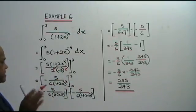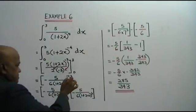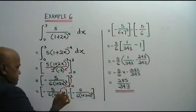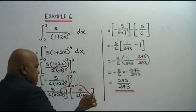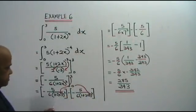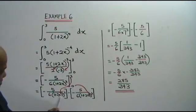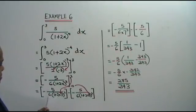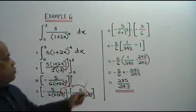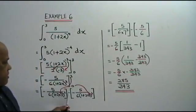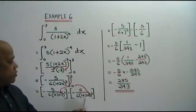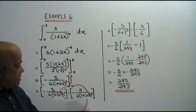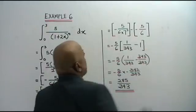So first we substitute x with 3, minus when we substitute x with 0. For x equals 3: 2 times 3 is 6, 6 plus 1 is 7, so we get negative 5 over 6 times 7 cubed. For x equals 0: 2 times 0 is 0, 1 plus 0 is 1, so 6 times 1 gives 6.